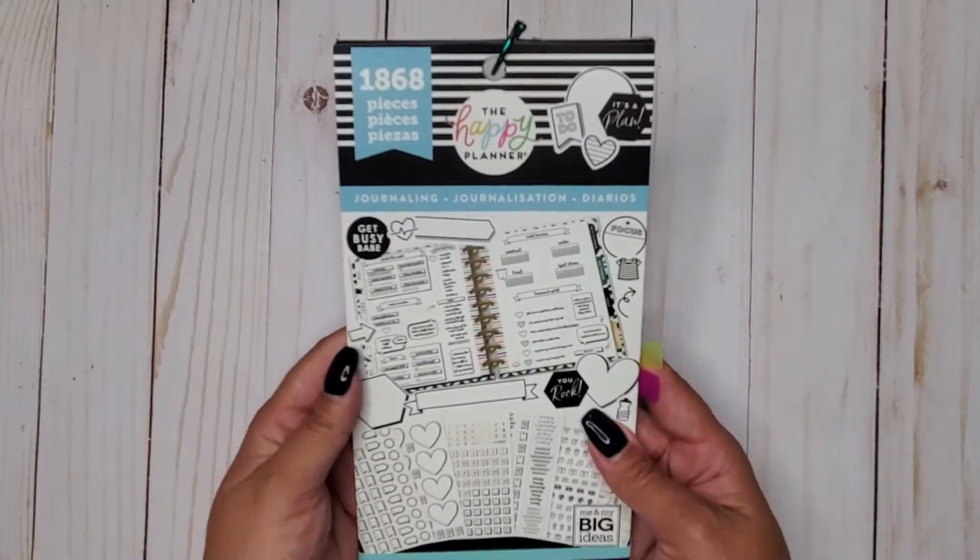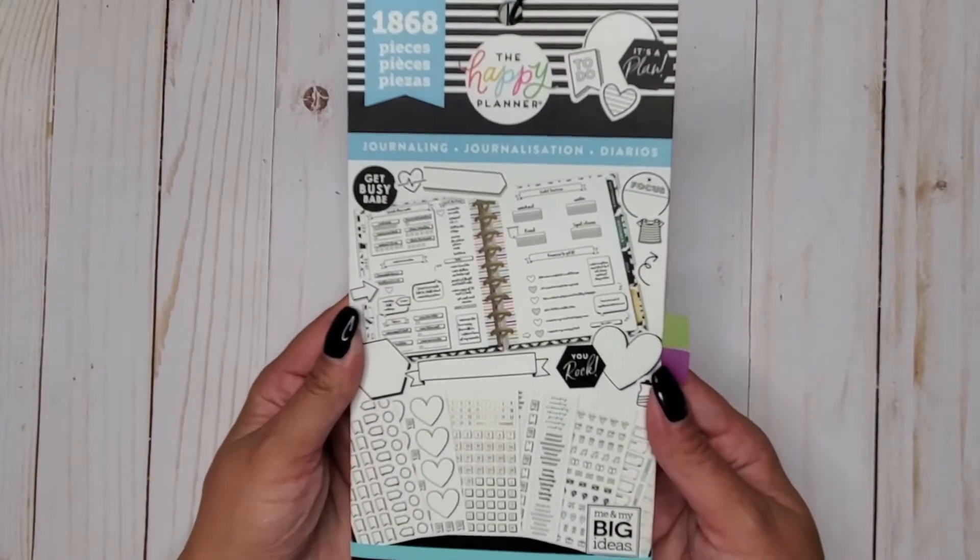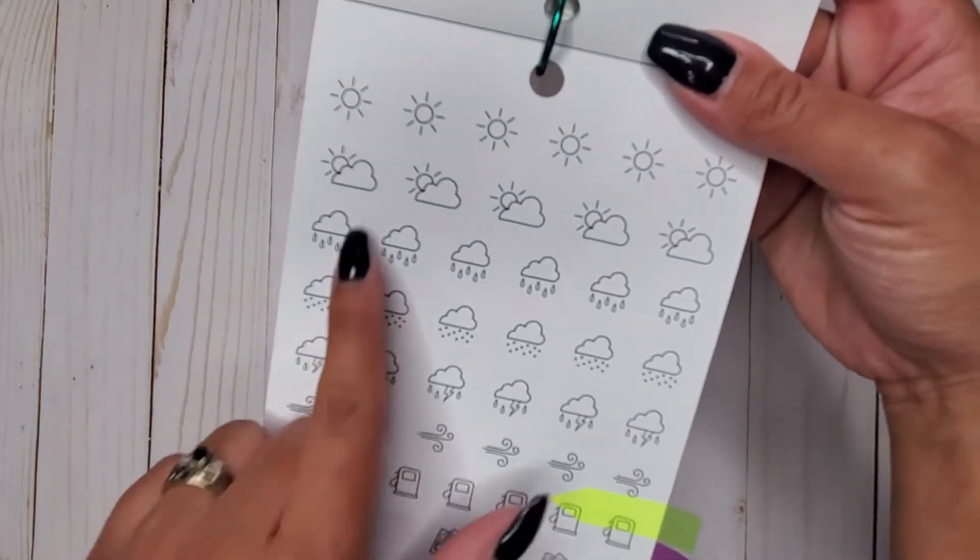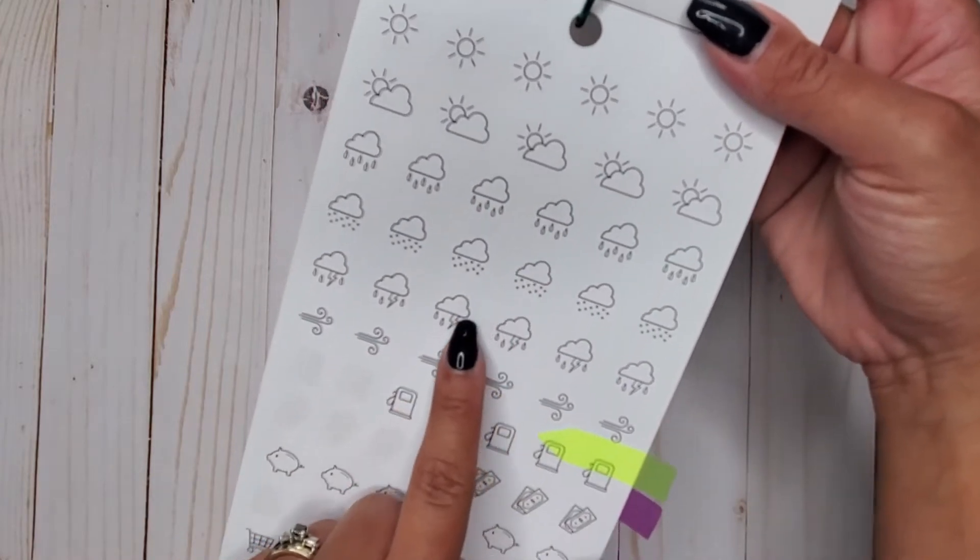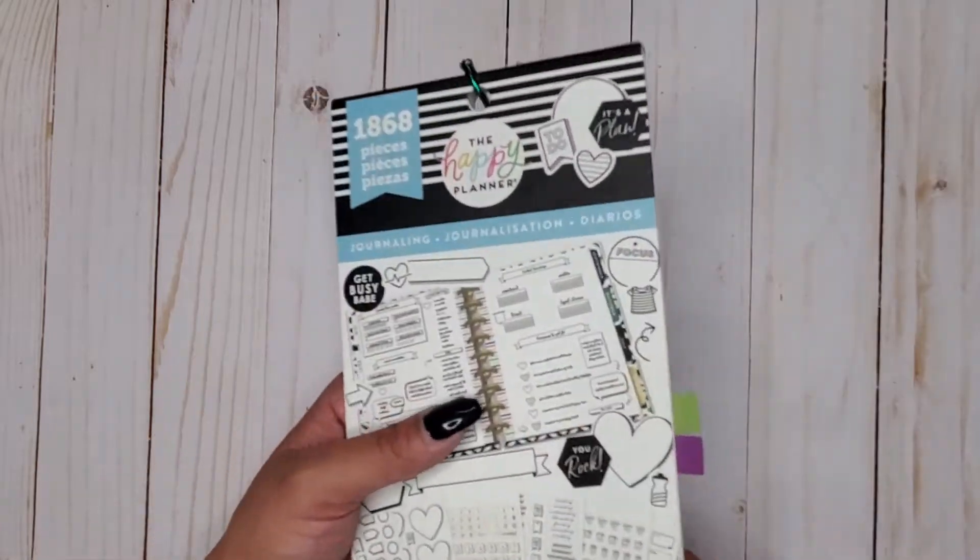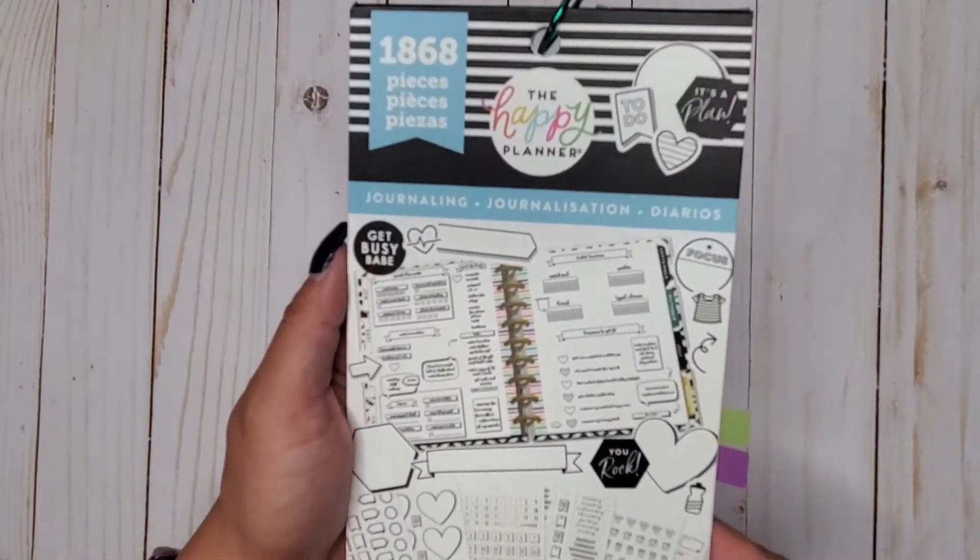Then we have journaling 1868. Again doodles, but these ones are on paper. We have our sun, our clouds, our clouds rain, our clouds rain wind, all that good stuff. So that is in journaling 1868.